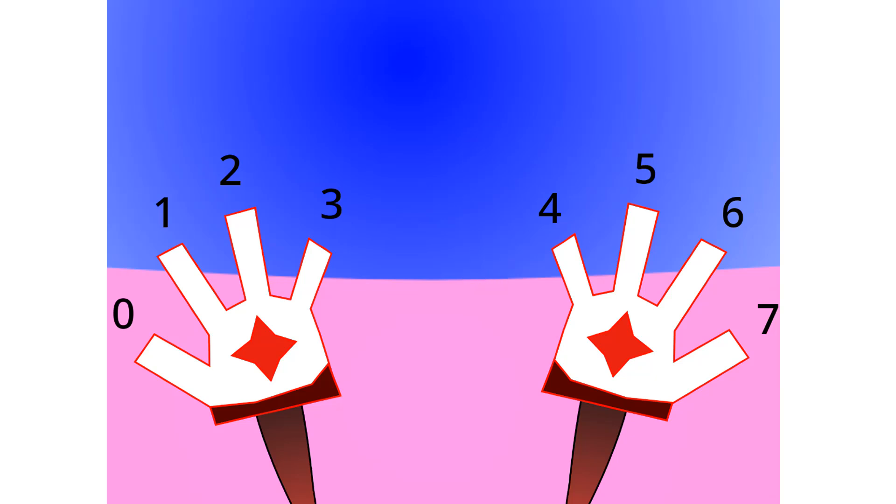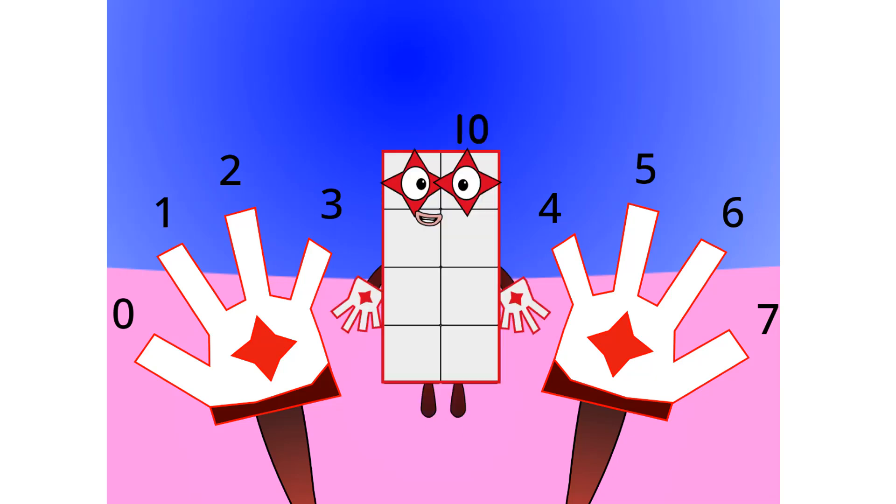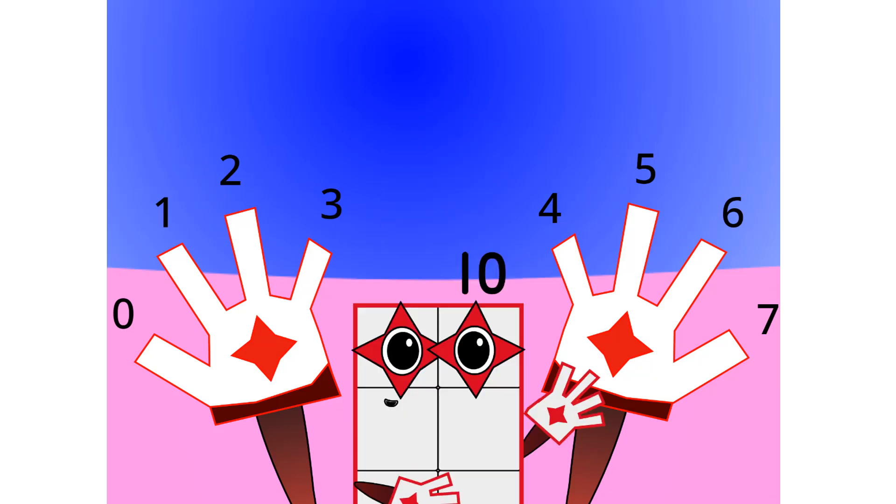This base has 8 digits. 0, 1, 2, 3, 4, 5, 6, and 7. Let's count in octal. 1, 2, 3, 4, 5, 6, 7, 10. Do you want to see another base?